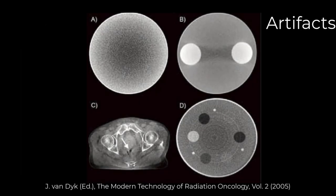Let's talk about some artifacts you can see on cone beam CT — some of these also apply to fan beam CT. On the upper left you'll see the so-called cupping artifact, meaning the density in the middle is apparently lower than the density on the outside, which is due to the scatter contribution in cone beam geometry, so the Hounsfield units won't be right. Here you'll see the streaking artifact between high density objects, due to photon starvation at the detector and under-responding in the reconstruction.